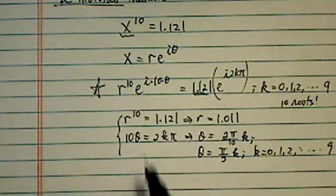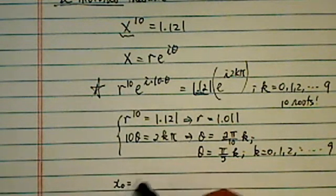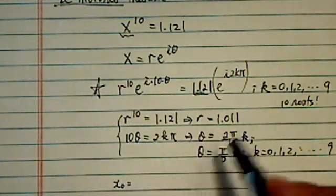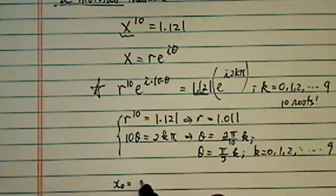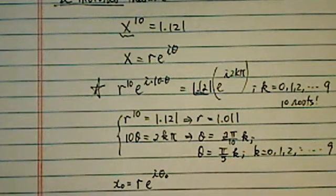Now from here onward, it's just purely a computation. For example, x of 0, or denotes theta equal to 0. So we have r and then e to the i, theta 0, 1.011.